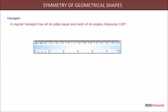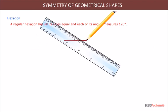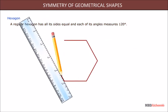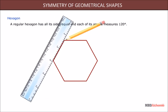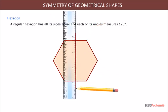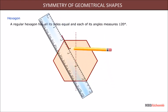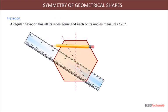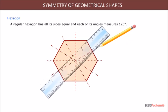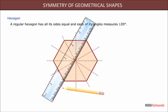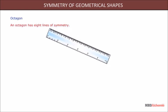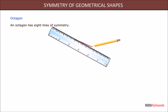A regular hexagon has all its sides equal and each of its angles measures 120 degrees. An octagon has eight lines of symmetry.